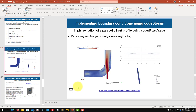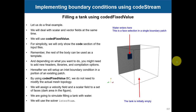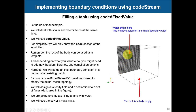Now let's move to the other tutorial with codeFixedValue — this one is a little more interesting. We go fully 3D for our final example. You can get the same outcome using codeStream, but accessing time is not straightforward, so it's better to use codeFixedValue here. We're going to use interFoam with this 3D domain. Imagine everything is set up except this specific patch — instead of redoing the mesh, you can use codeFixedValue.